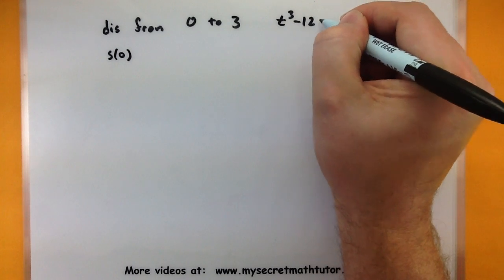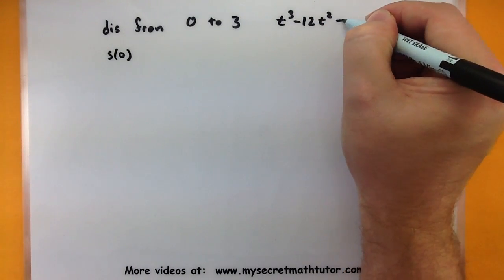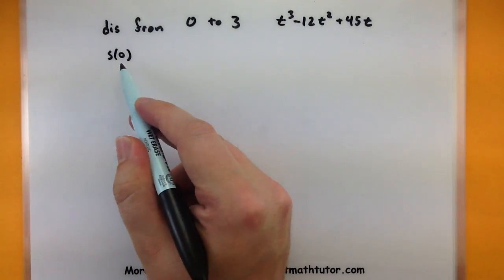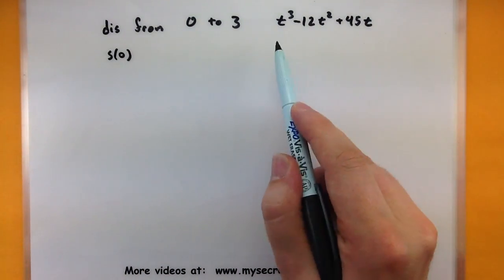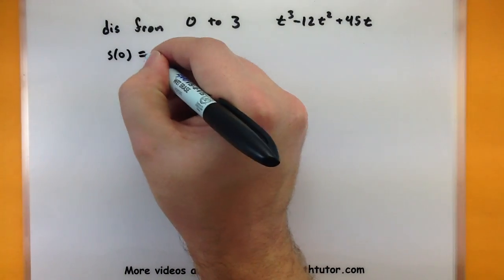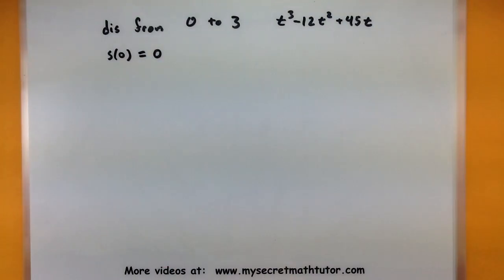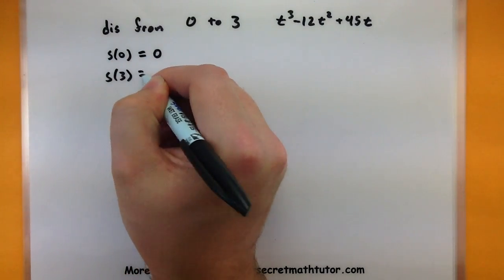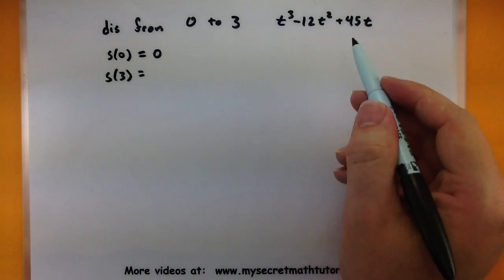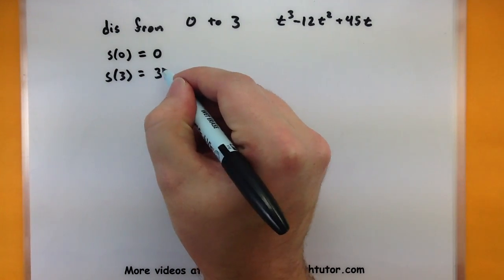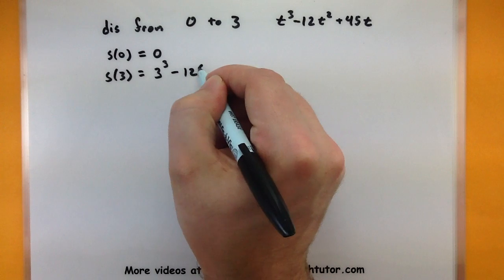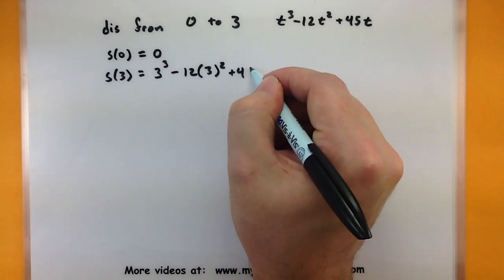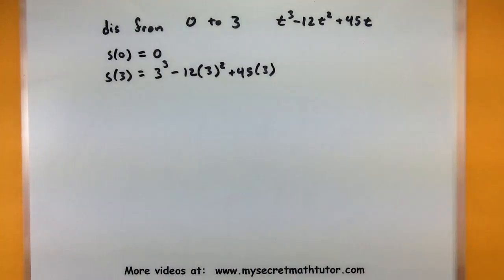Okay, so what happens when you plug a 0 into your position? Well, everything has a t in it, so everything would just go to 0. Alright, so where's the position after 3 seconds? Well, this one does require a little bit more work, but I think we can do it. So I'd have 3³ - 12(3²) + 45(3).